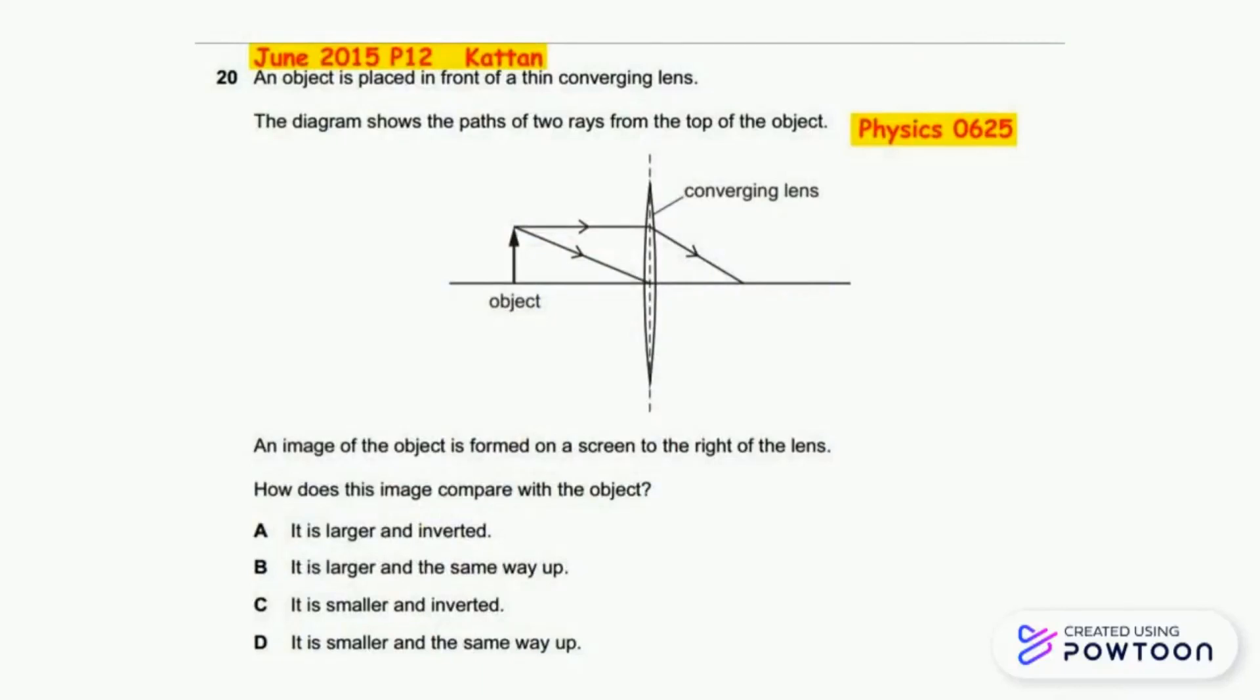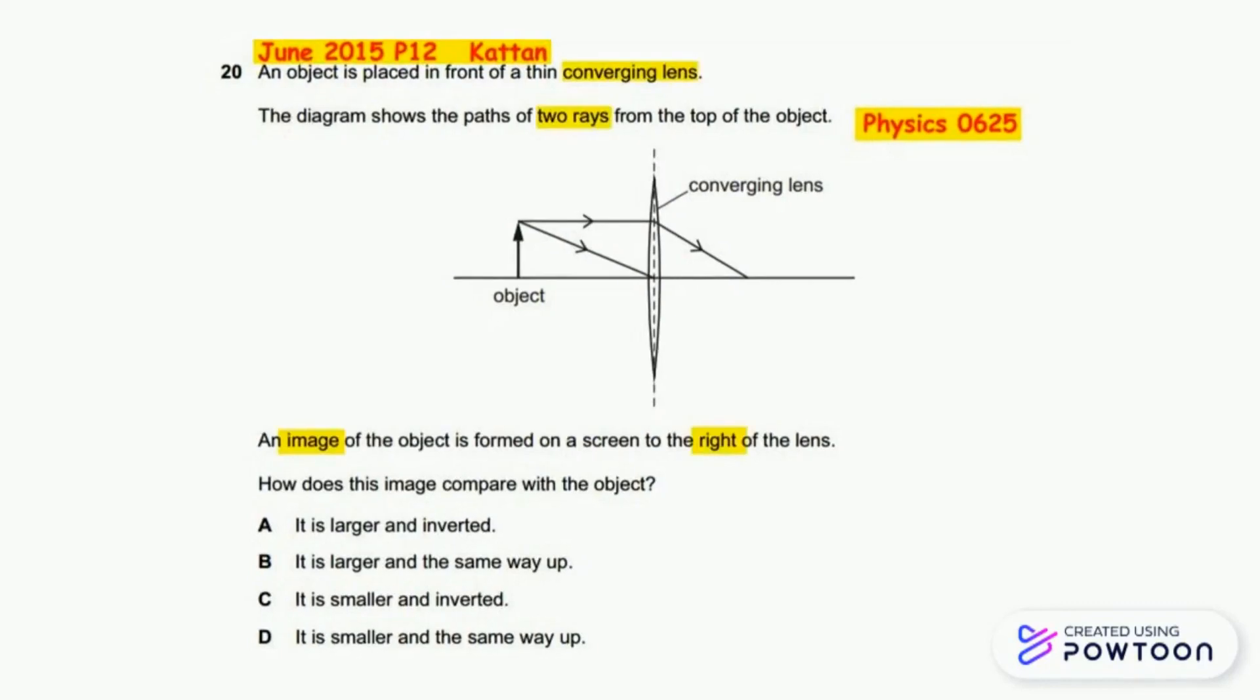The diagram shows the path of two rays from the top of the object. An image of the object is formed on a screen to the right of the lens. How does this image compare with the object?